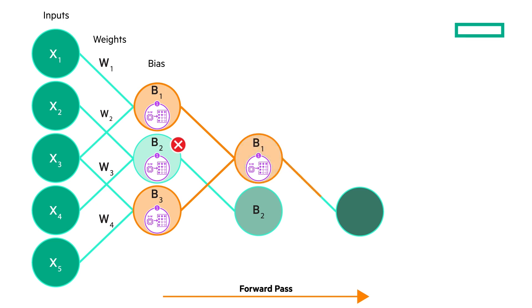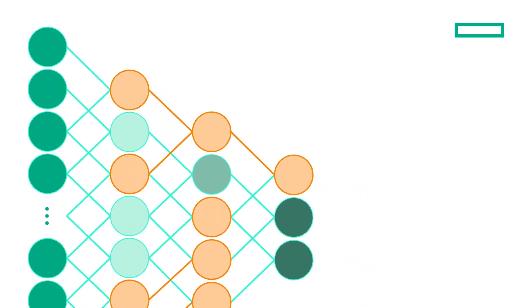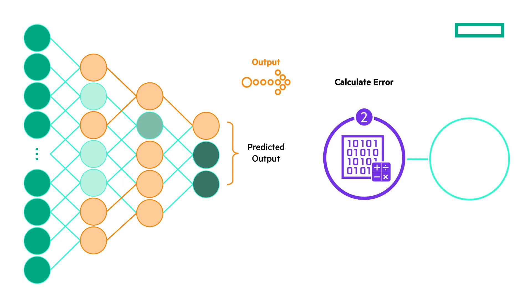This is the process that each node goes through during the forward pass through a neural network. Each layer trains on a distinct set of features based on the output of the previous layer. The further you advance into the neural net, the greater the complexity of the features that the nodes begin to recognize, because they are aggregating and recombining features from the previous layer. When this process completes through all the nodes of all layers, it reaches the end of the forward pass and a predicted output is reached.